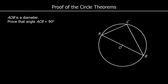We do that by splitting our triangle into two isosceles triangles, by joining up the centre of the circle to C. So for triangle AOC, AO and OC are both the radius, so they're equal. The other side of an isosceles triangle is called the base, and the two angles at the base of an isosceles triangle are equal, so we can call them both X. And we've got another isosceles triangle OBC, where OC and OB are both the radius, so they're equal.